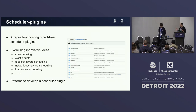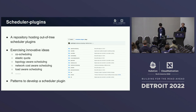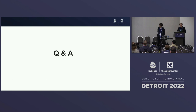The scheduler-plugins repo is a marketplace where you can contribute ideas and implement plugins that don't belong in-tree. It currently includes useful plugins like co-scheduling, elastic quota, topology-aware scheduling, network-aware scheduling, and load-aware scheduling. If you have similar requirements, you're welcome to check it out. That covers today's session — the next part is Q&A.